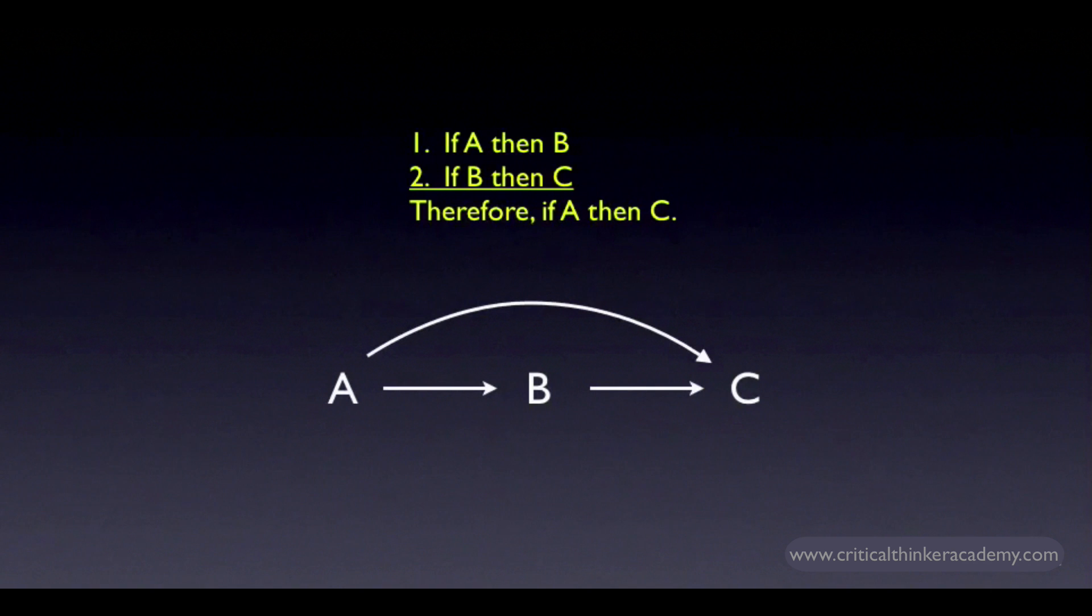At any rate, what this argument form shows is that the relation of logical implication is transitive. If A logically implies B and B logically implies C, then A logically implies C.